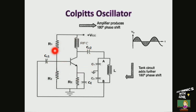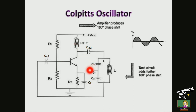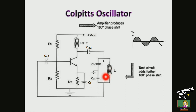The common emitter amplifier stage provides a phase shift of 180 degrees. As the emitter is grounded, the base and collector voltages are 180 degrees out of phase with each other. As the center of capacitors C1 and C2 is grounded, the potential at point A is 180 degrees out of phase with the potential at point B. Hence the feedback network also provides an additional phase shift of 180 degrees. Thus the total phase shift around the loop is 360 degrees or 0 degrees, which satisfies the required condition for oscillation.